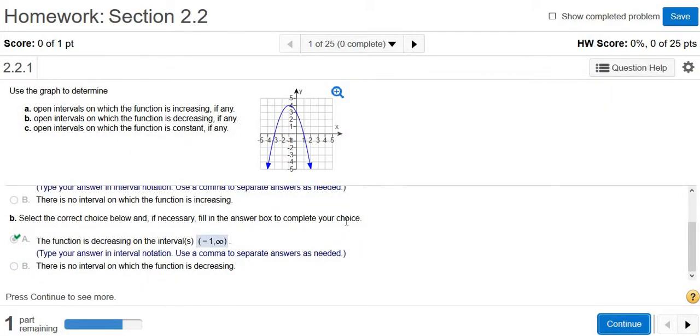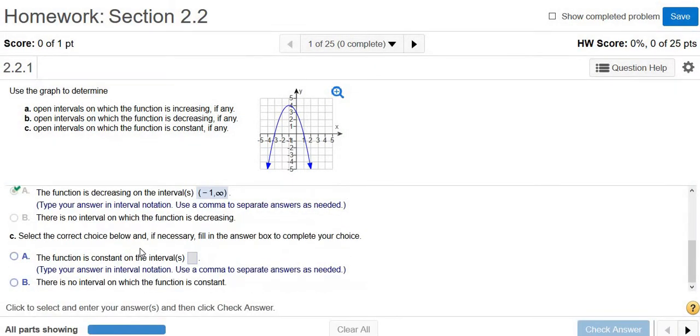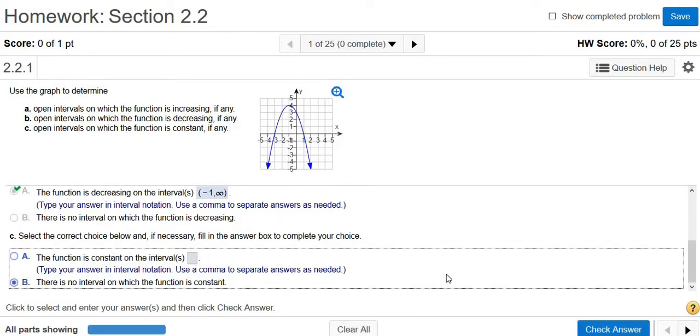Then it wants to know where the graph is constant. So constant means it's like a horizontal line. So it's never going to be constant anywhere.